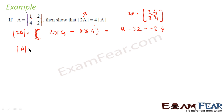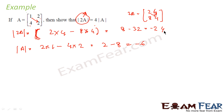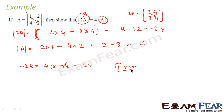Similarly, determinant of A is multiply diagonal elements: 1 into 2 minus 4 into 2, that is 2 minus 8, which is minus 6. Now we have to prove that minus 24 equals 4 into minus 6. So LHS is minus 24 and RHS is 4 into minus 6, which is also minus 24. Both LHS and RHS are the same — hence proved.